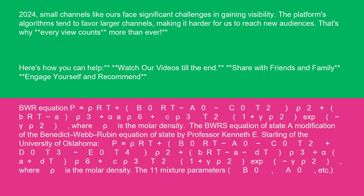The original BWR equation: P equals rho RT plus (B0 RT minus A0 minus C0/T²) rho² plus (B0 RT minus A) rho³ plus alpha a rho⁶ plus C rho³/T² (1 plus gamma rho²) exp(minus gamma rho²), where rho is the molar density.